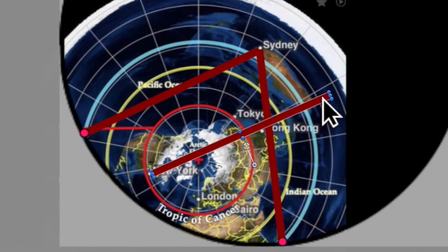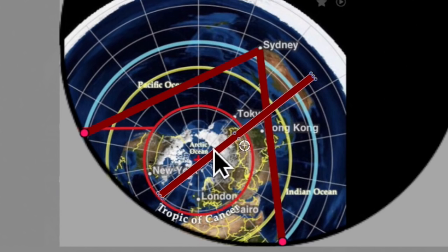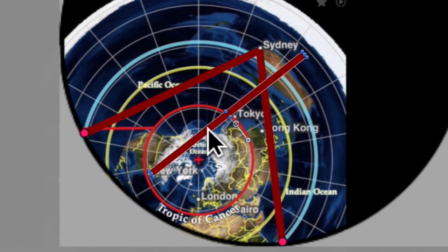So from New York you should be able to see the Sun all year round, 24 hours a day. You would never have any time where you can't see the Sun in the sky, apart from if there's a bit of cloud cover or something like that.